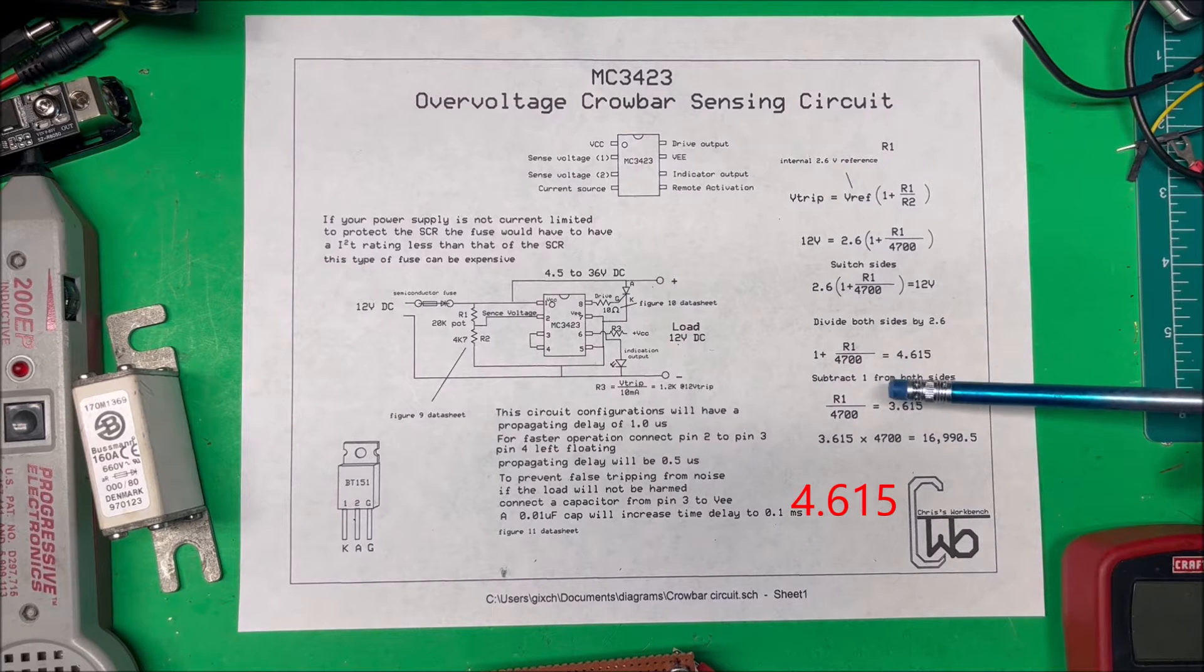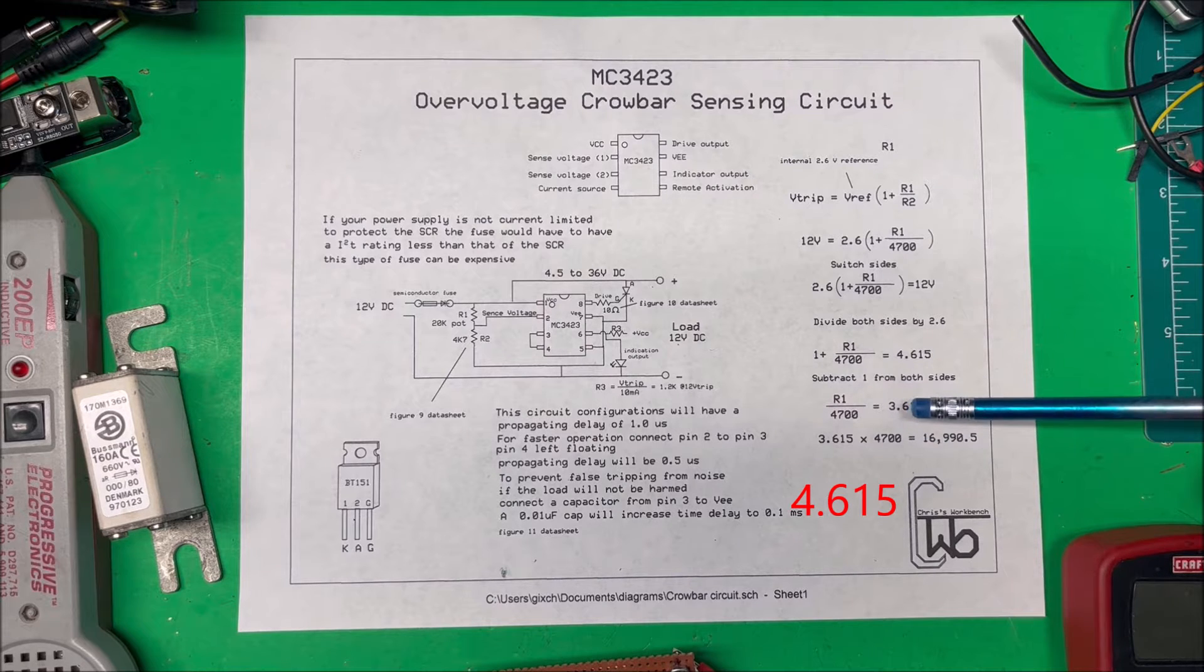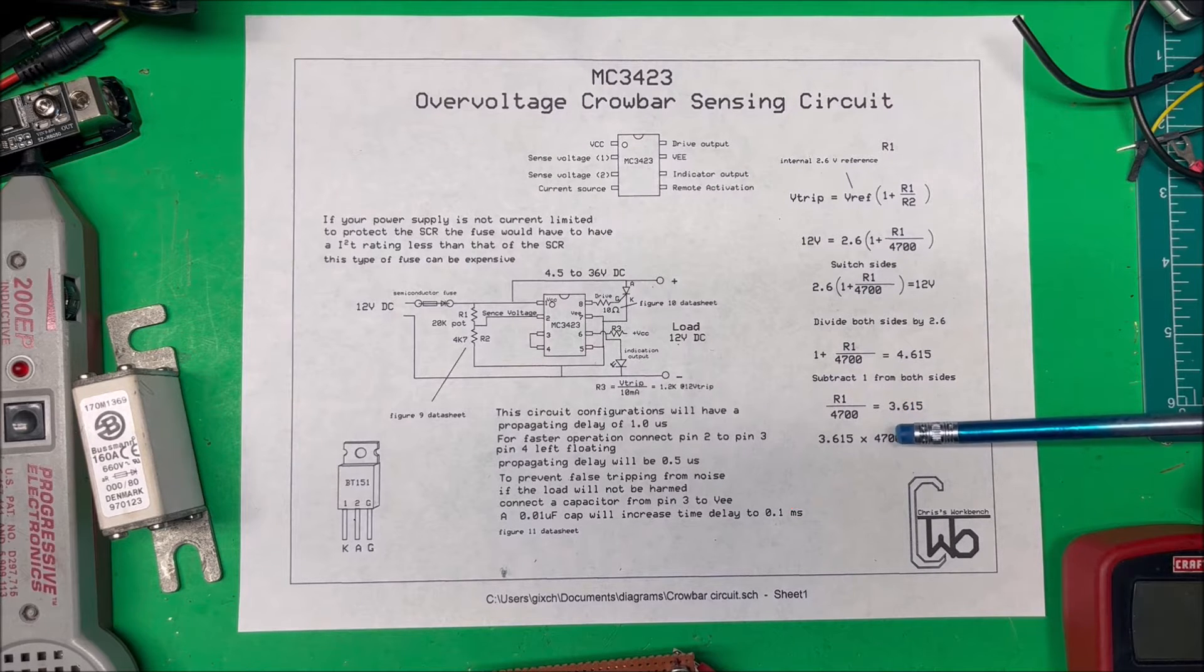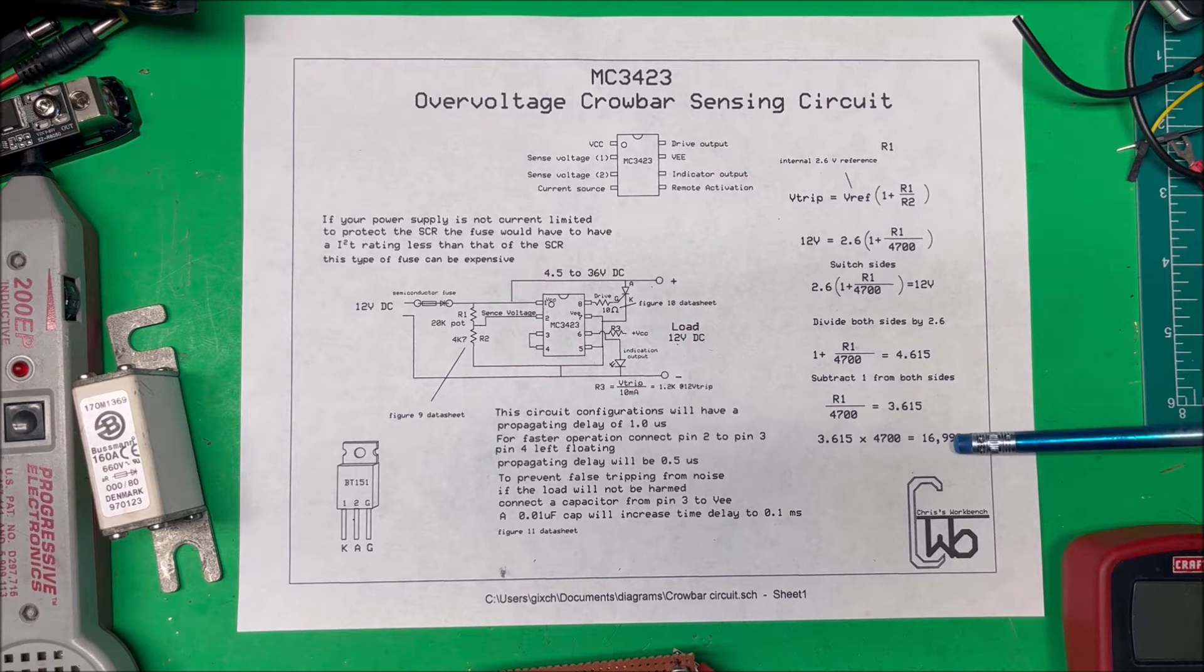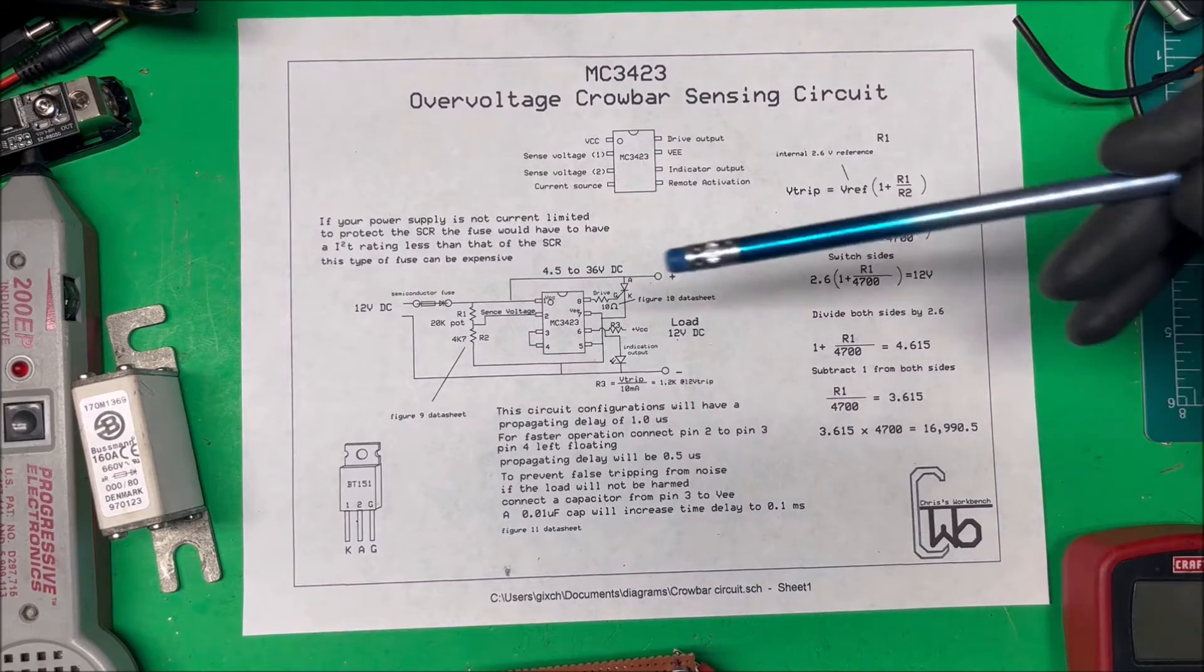Then subtract 1 from that. We multiply 4.7 times that and it comes out to about 17k ohm resistor here. In this case, I'm going to put a 20k pot in there so I can adjust it a little bit.